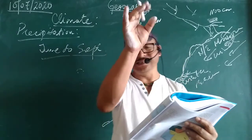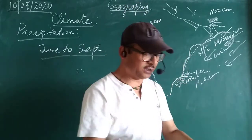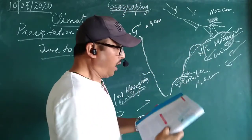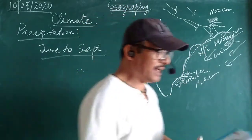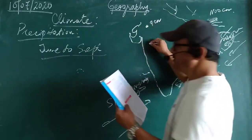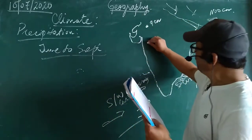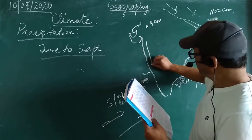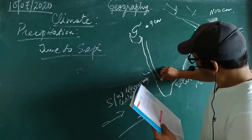Therefore, the Tamil Nadu Coast is the only coast in India which gets rainfall in the beginning of the winter season. Now let me draw a diagram. Let's say these are the Western Ghats — try to understand.